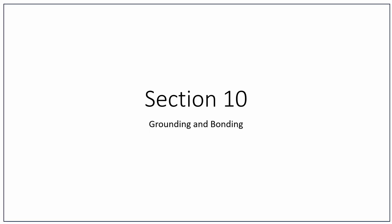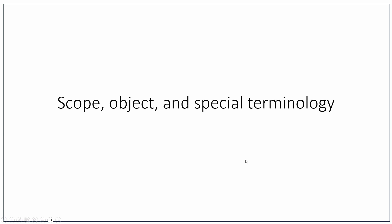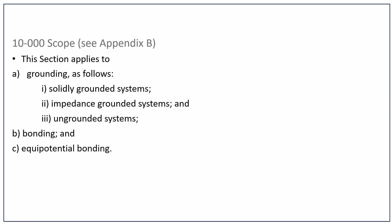All right guys, next section — section 10, grounding and bonding. Probably one of the most important sections in the code. Let's start off with the first rule here. The first section is going to be scope, object, and special terminology. The first code rule here is obviously 10-000.